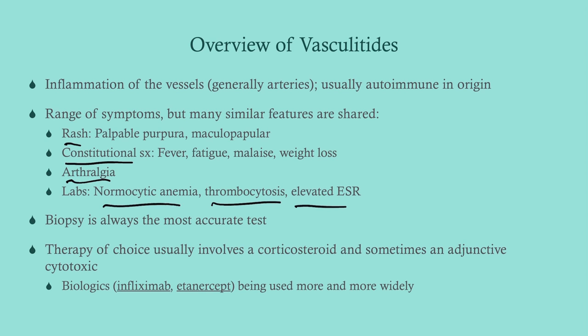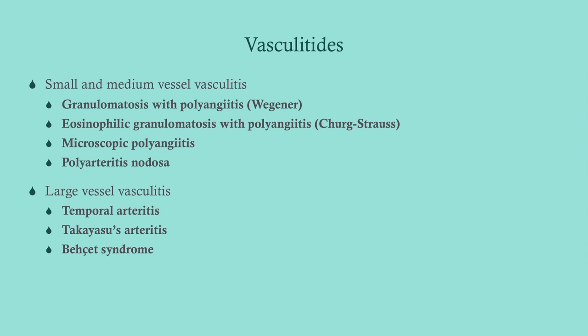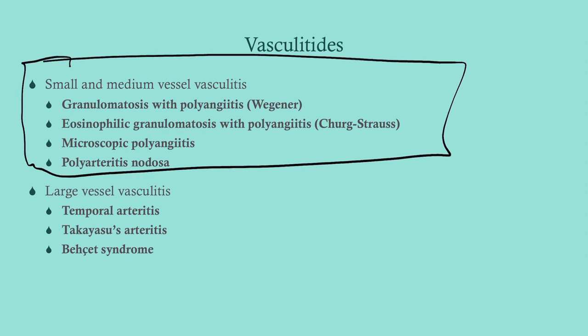Biopsy is always the most accurate test to diagnose vasculitis. Therapy usually involves a corticosteroid, and sometimes an adjunctive cytotoxic like methotrexate or cyclophosphamide. But pretty much in all vasculitis cases we are giving a steroid like prednisone. We'll cover four vasculitides here and save the large vessel vasculitis for another talk.